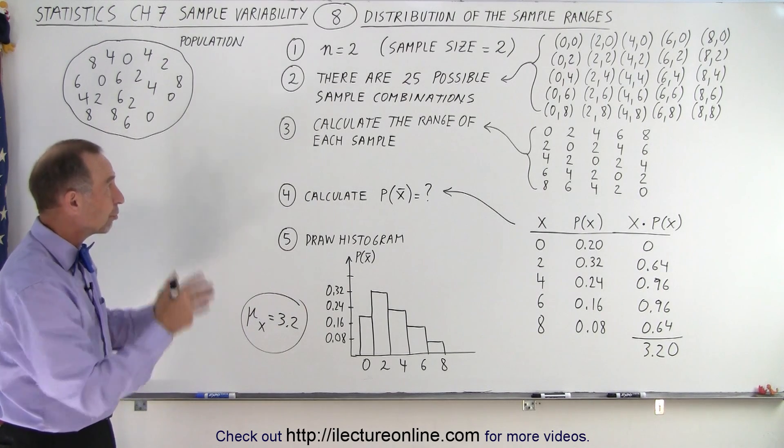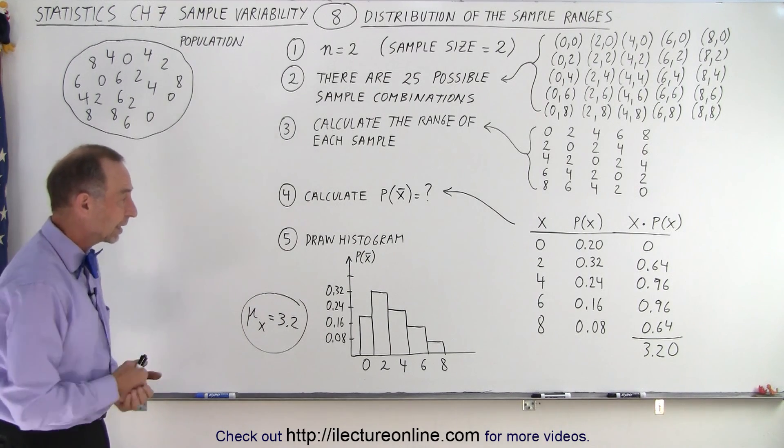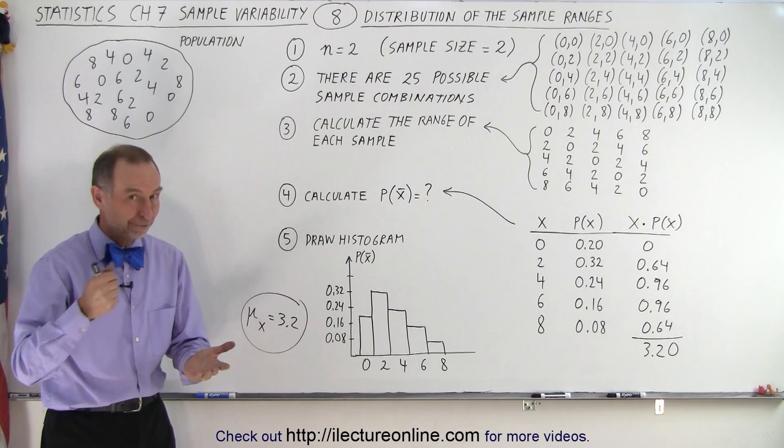So that is how we do it. The distribution of the sample ranges is calculated like that. That is how it's done.